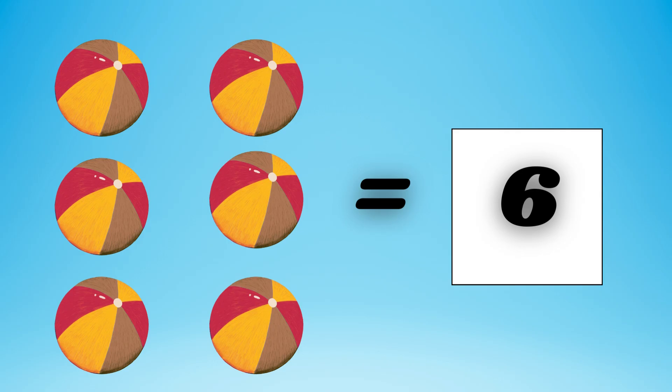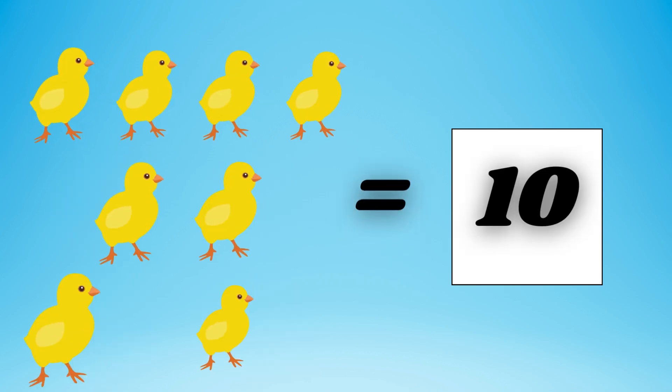Count the balls: 1, 2, 3, 4, 5, 6 — equal to 6 balls. Count the chicks: 1, 2, 3, 4.